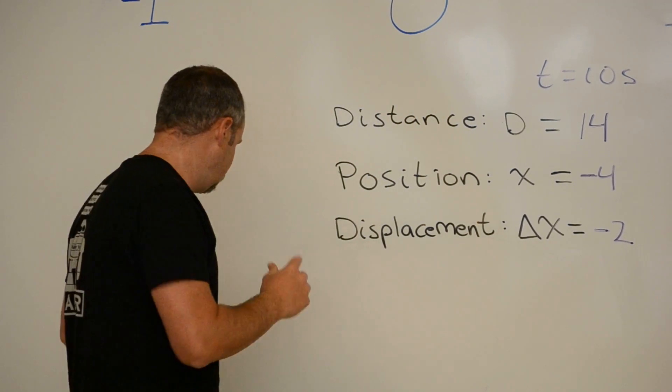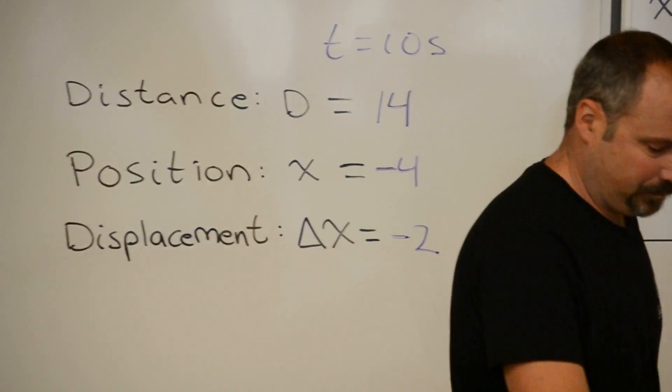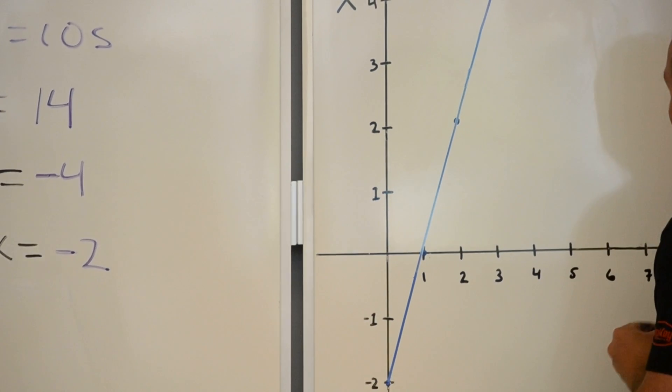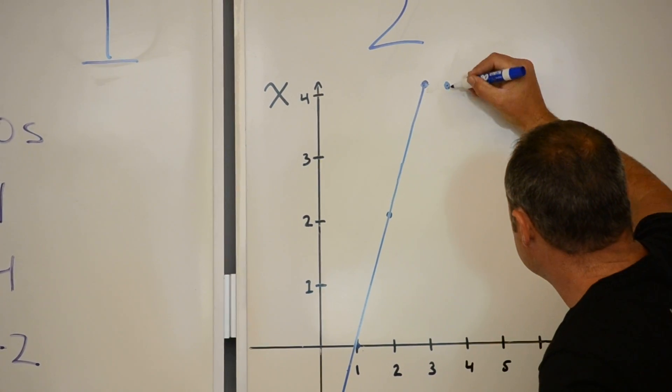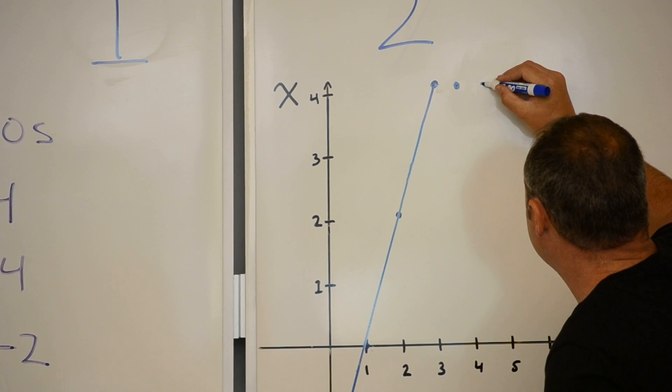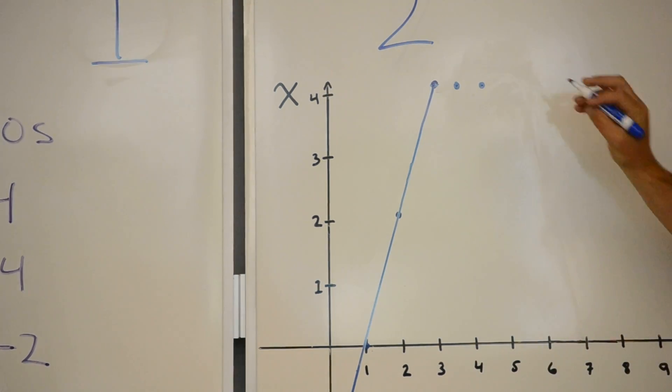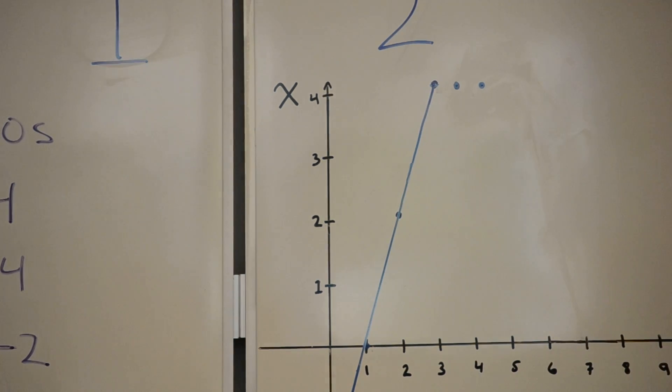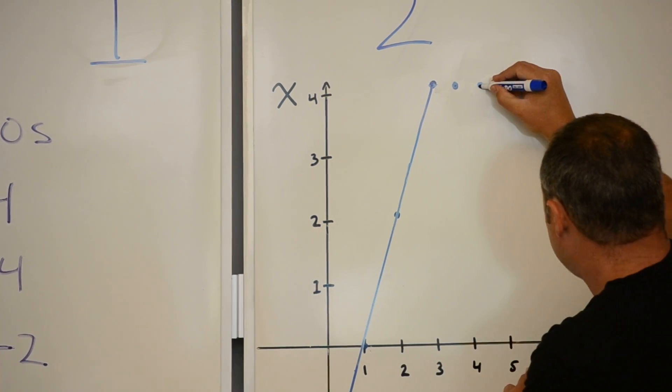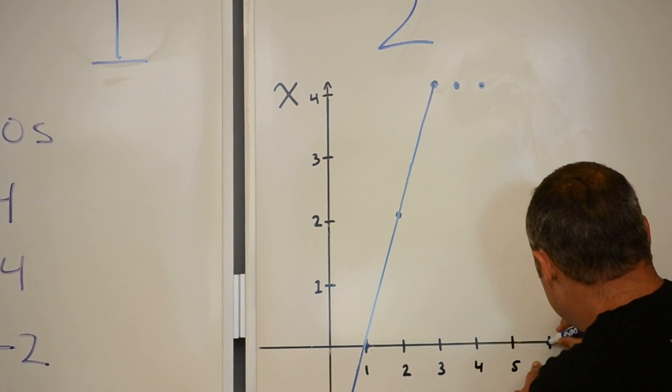Now, let's do the graph. What happened? I rested for 2 seconds. So, at 4 seconds, I'm still here. And, at 5 seconds, still there. Then, in 1 second, boldly move 4 steps in the negative direction. So, at 6 seconds, I'm here at 0.